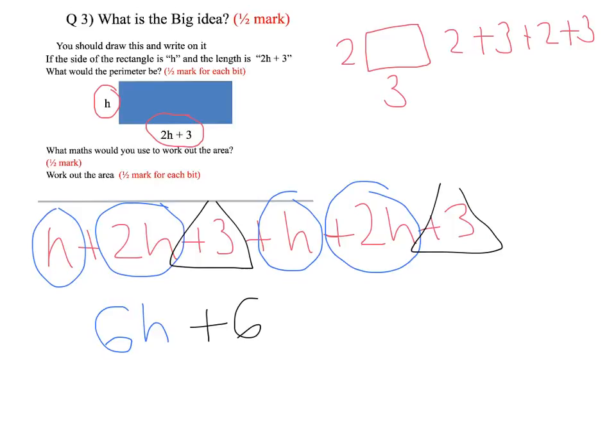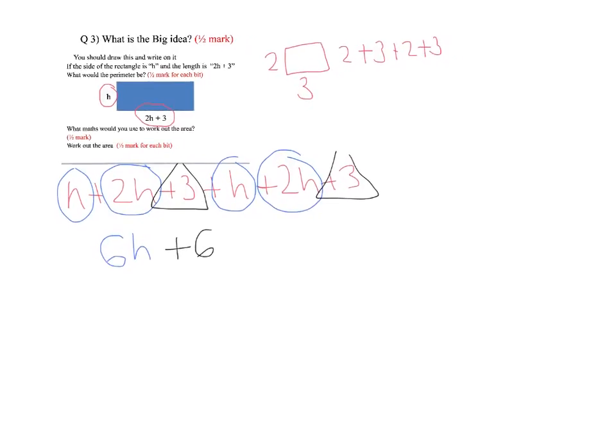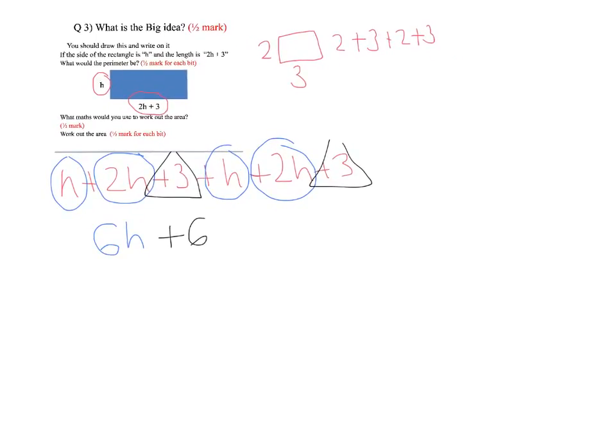Now the next question asks us to work out the area, and it asks what kind of maths we would need. So to do area, we need to use the grid method. Now if it was number, we would do 2 times 3, and get 6 for that example from before.